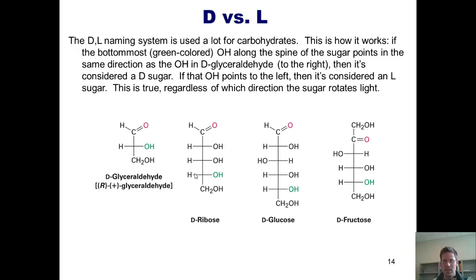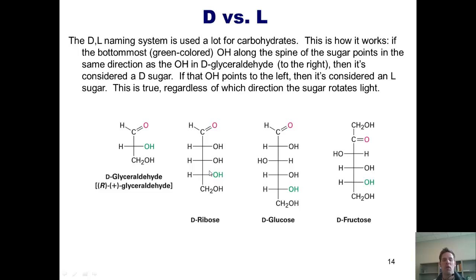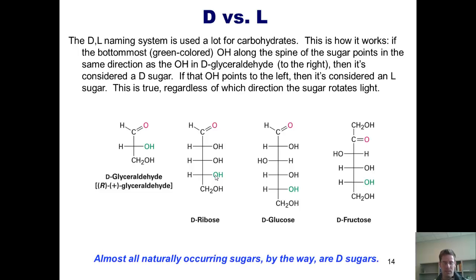So how did they come up with this convention? They noticed that D-glyceraldehyde, which is dextrorotatory, has its OH pointing to the right when drawn in the Fischer projection, and L-glyceraldehyde has its OH pointing to the left. They based the rest of the convention completely on that fact. Hence, every single sugar, when drawn in its open-chain Fischer projection, follows that convention. And just in case you're ever on a trivia show, almost all naturally occurring sugars happen to be D sugars.